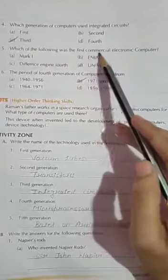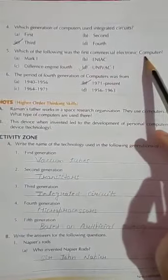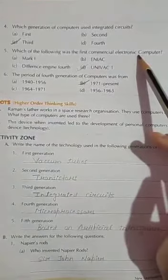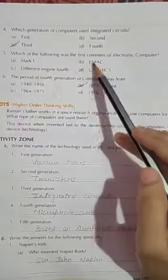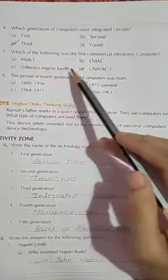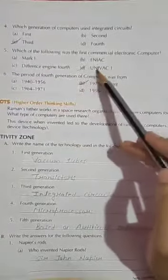Which of the following was the first commercial electronic computer? First commercial electronic computer kaun sa tha? Mark 1, ENIAC, Difference engine 4th ya UNIVAC 1. UNIVAC 1.